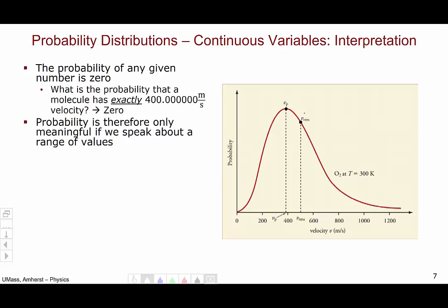Because of this, probability is only meaningful if we speak about some kind of range of values. Thus, to get the probability, we look at the area under the curve between the values we're interested in.